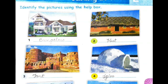The second one is hut. It is made up of bamboo and straw.